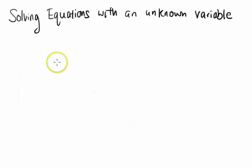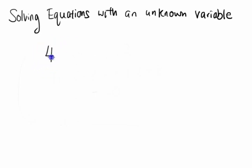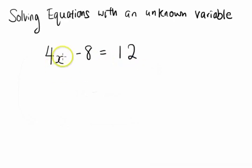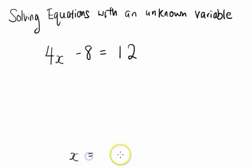Solving equations with an unknown variable. Very often in algebra, you are required to solve equations that have an unknown variable. For example, say you have 4x minus 8 equals to 12. This is an equation with a left-hand side and a right-hand side. You have an unknown variable x, and you are supposed to solve for x, which means making x equal to something.